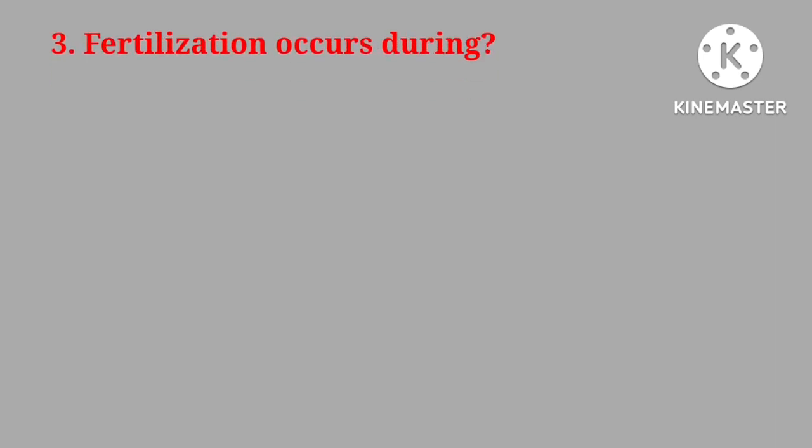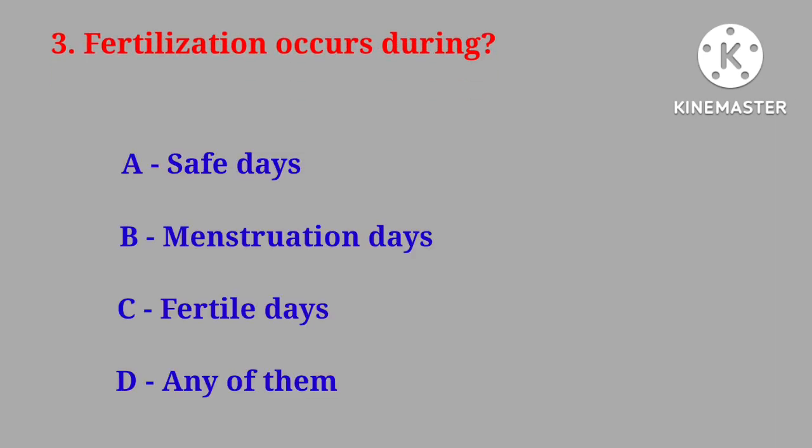Question No. 3: Fertilization occurs during: safe days, menstruation days, fertile days, or any of them. Correct answer is fertile days.